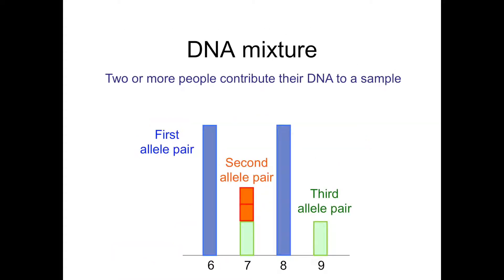A DNA mixture occurs when two or more people contribute their DNA to the same sample. This is indicated here with a lot of DNA from an individual shown in blue with a 6-8 allele pair, a second allele pair from someone who is homozygote for a 7, and a third allele pair that's a 7-9 from a third person. The combination of these amounts produces a signature for this particular biological mixture.